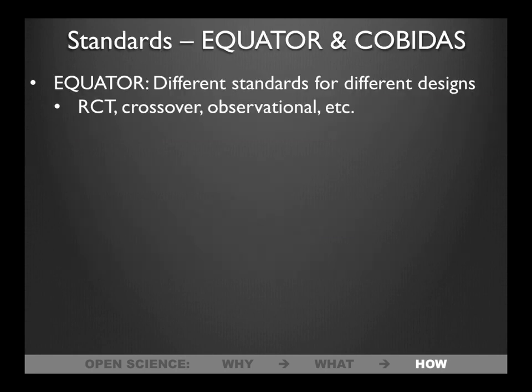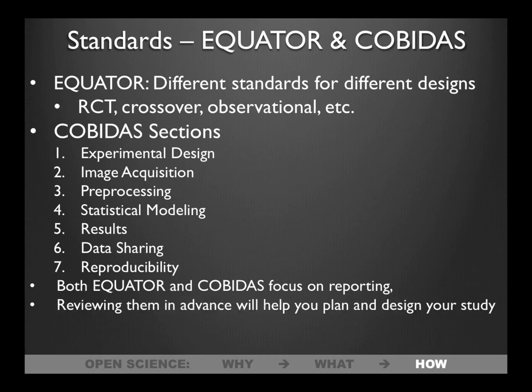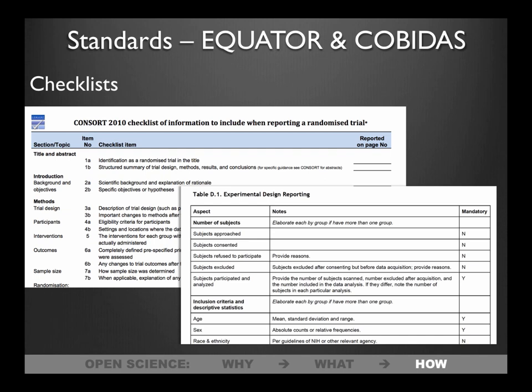EQUATOR has different documents for RCTs, crossovers, and observational studies; COBIDAS has sections for every chunk of your analysis, and both focus on reporting. These checklists are also really useful when reviewing papers. If you review a paper and find there isn't enough information to properly evaluate it, you can point to an internationally recognized standards document and say: I need you to fill in these sections from the COBIDAS or EQUATOR document — there's not enough information here to review the paper.